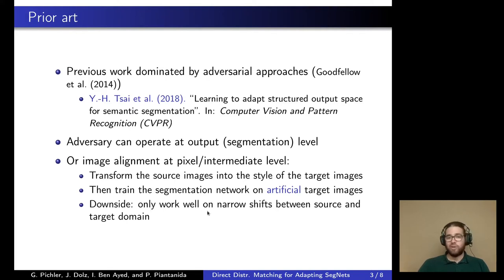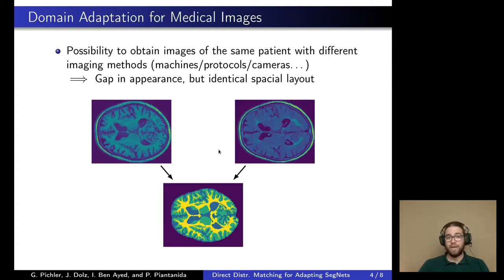This approach only really works well if the domain shift between source and target is very narrow. However, in the case of medical images, all of that might not even be necessary, because in medical imaging it's entirely feasible to have a source domain image and a target domain image that both correspond to exactly the same ground truth labels. This can be achieved by imaging the same patient multiple times using different machines or protocols, and this is exactly what our algorithm exploits.